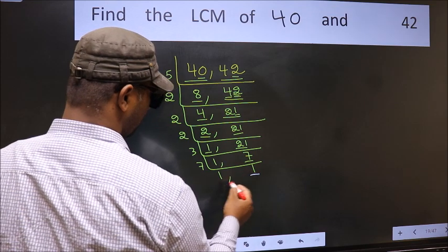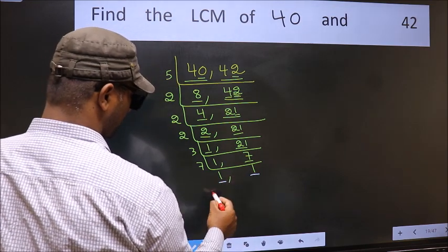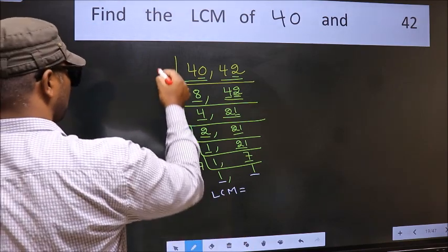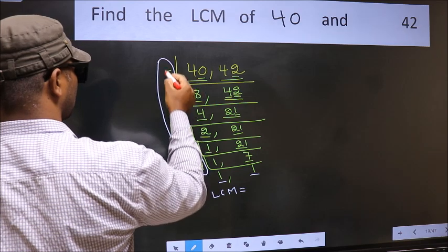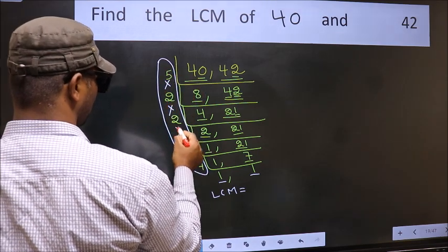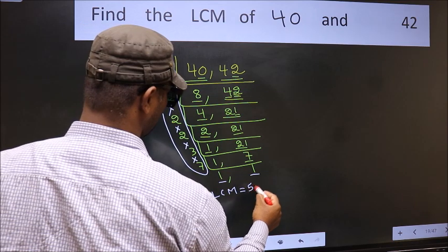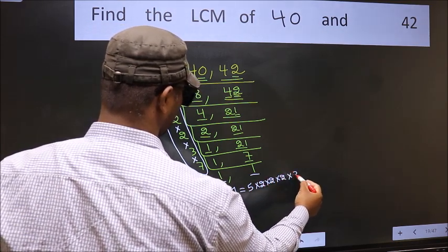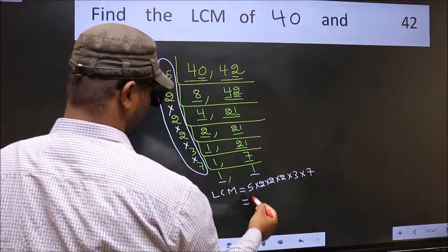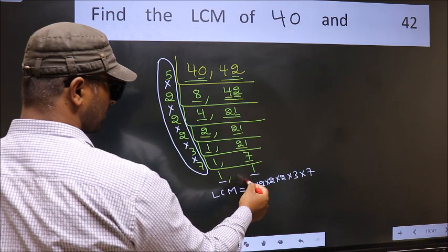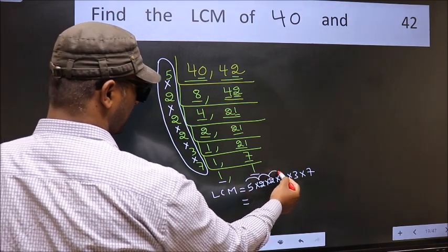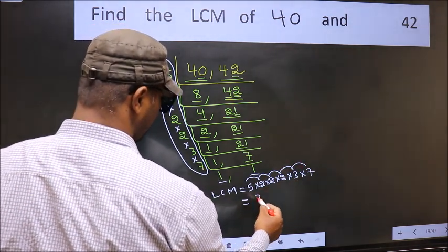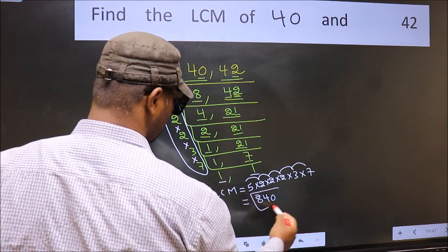We got 1 in both places, so our LCM is the product of these numbers. That is 5 into 2, into 2, into 2, into 2, into 3, into 7. Let us multiply these numbers: 5 into 2 is 10, into 2 is 20, into 2 is 40, into 3 is 120, into 7 is 840. So 840 is our LCM.